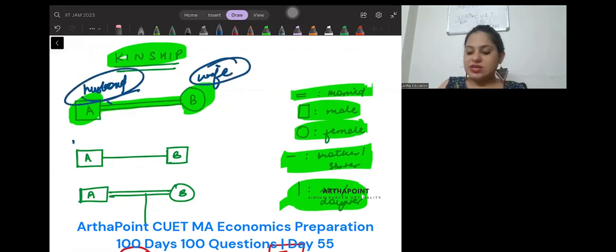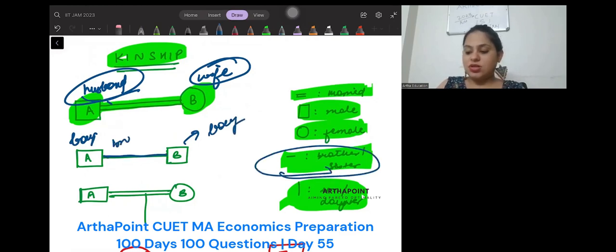A is boy, B is also boy and they are having a blood relation of brother-sister. So they are brothers.